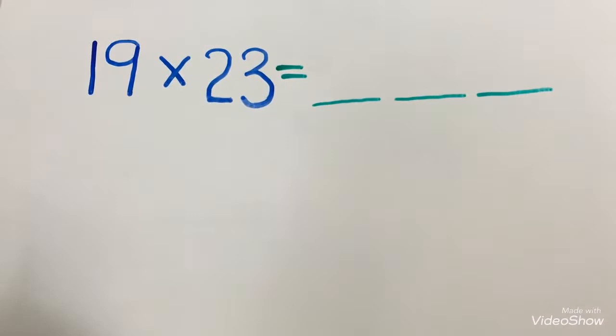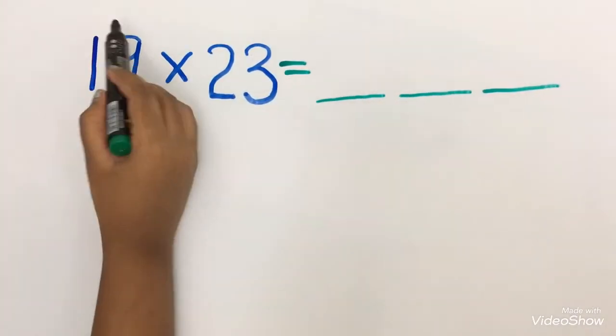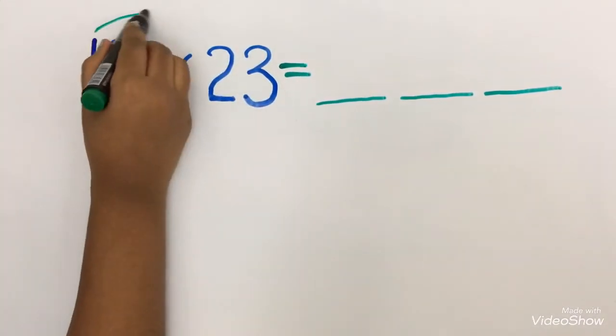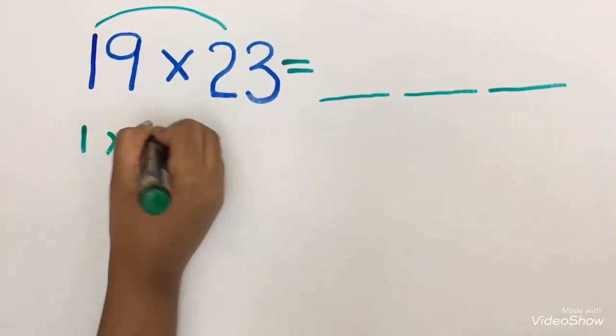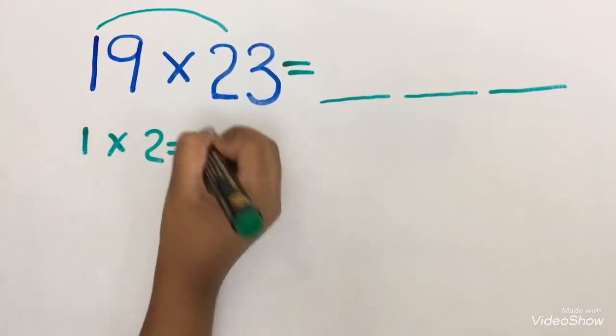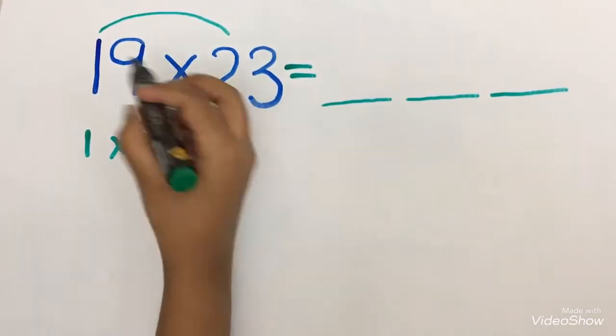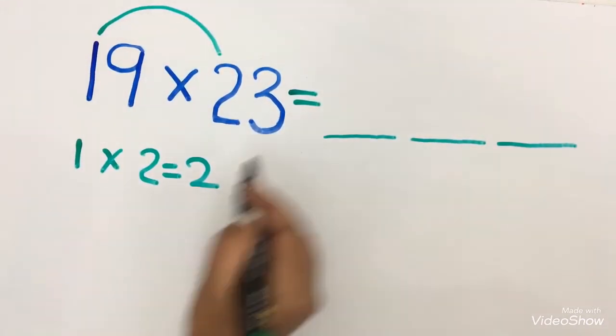Now I am going to multiply 1 and 2. So 1 into 2 equals to 2. Now we will write this 2 here.